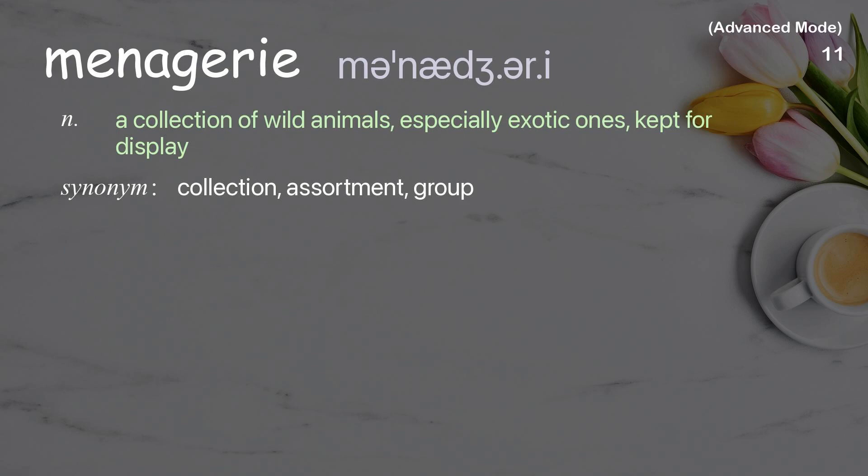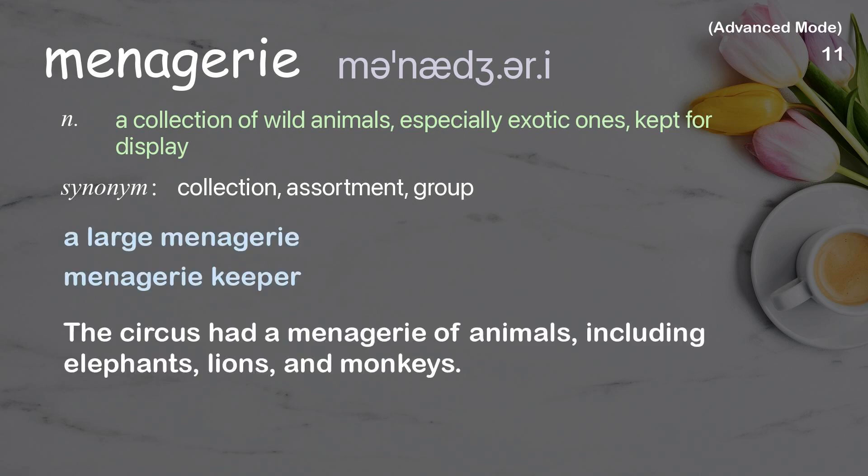Menagerie: A collection of wild animals, especially exotic ones, kept for display. Examples: A large menagerie. Menagerie keeper. The circus had a menagerie of animals, including elephants, lions, and monkeys.